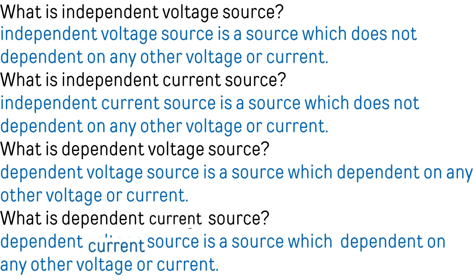What is an independent voltage source? An independent voltage source is a source which does not depend upon any other voltage or current. What is an independent current source? An independent current source is a source which does not depend upon any other voltage or current. What is a dependent voltage source? A dependent voltage source is a source which depends upon any other voltage or current. What is a dependent current source? A dependent current source is a source which depends upon any other voltage or current.